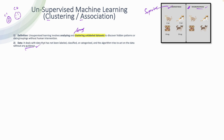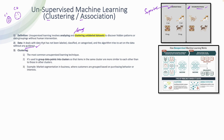Clustering is the most common unsupervised machine learning technique. It is used to group data points into clusters, so cluster one contains one type of data point and cluster two contains another type. Items in the same cluster are more similar to each other than to items in the other cluster.